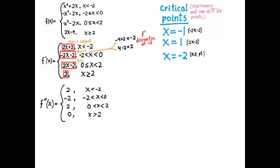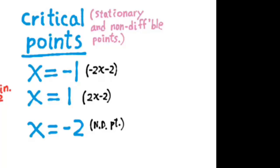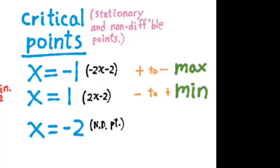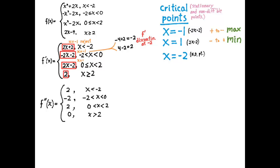Before looking for inflection points, I can analyze these critical points using the first derivative test. x equals negative 1 is a zero of the decreasing function negative 2x minus 2, where the function changes sign from positive to negative — therefore x equals negative 1 corresponds to a maximum of f. Now 2x minus 2 is an increasing function, so its zero is a place where it changes sign from negative to positive — the first derivative test says this is a location of a minimum in f. And x equals negative 2 is a non-differentiable point where the derivative changed from negative 2 to positive 2, another negative-to-positive change, meaning there is a minimum at x equals negative 2.